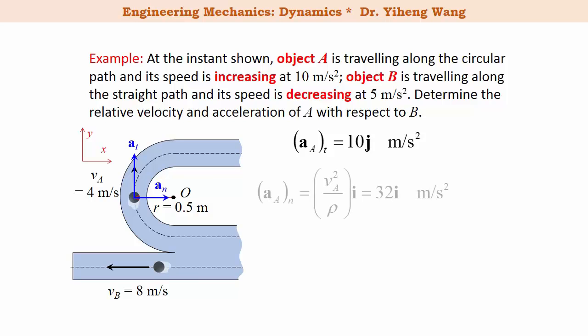And the normal acceleration of object A, a_n, is evaluated by the equation v squared over rho, rho being the radius of curvature, and it can be calculated to be 32i m per second squared. Therefore for object A, its acceleration in Cartesian vector form is 32i plus 10j m per second squared.